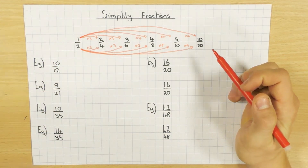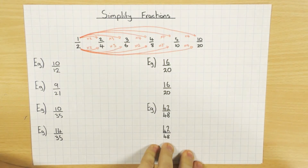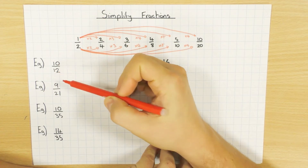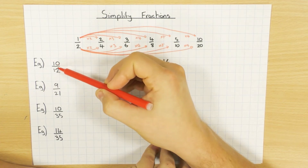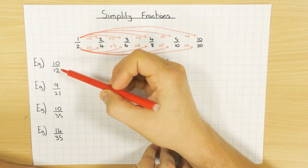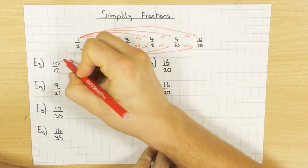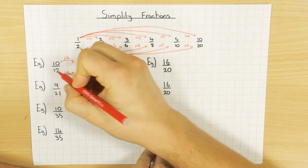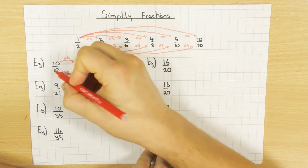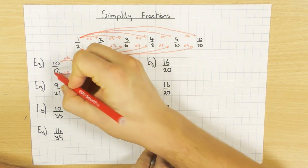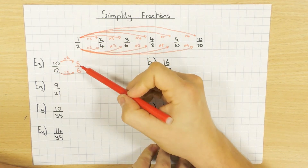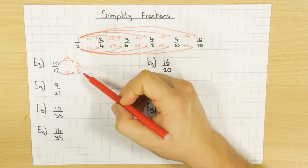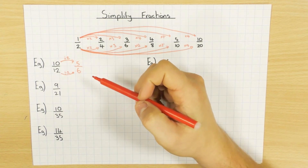I've got a few examples here, so let's have a look. I've got 10 over 12. The first thing to do is spot: is there a number that goes into 10 and into 12? Hopefully you could spot that, because they end in a zero and a two — they're both even — two will go into it. So I divide by 2, both top and bottom, to keep it equivalent. 10 divided by 2 is 5, and 12 divided by 2 is 6. Is there a number that goes into 5 and 6? No, so you can stop there. That's the smallest possible fraction, equivalent to 10 over 12.